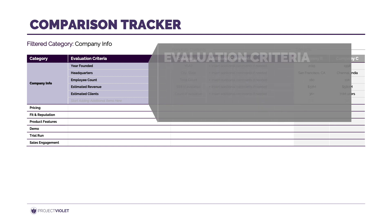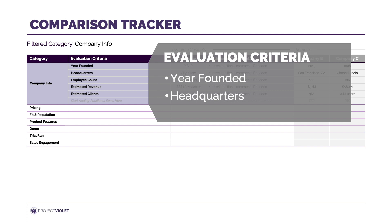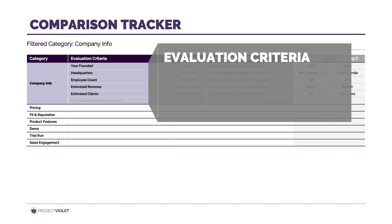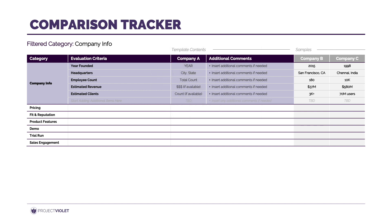Starting at the top, the year founded gives insight into how established the company may be — you may be more comfortable with a company that's been around a while versus a brand new startup. Location may matter if onshore or offshore support is a factor. The rest of the company information is meant to give you an idea of the size of the company, and you may decide to eliminate or support a vendor based on those factors.